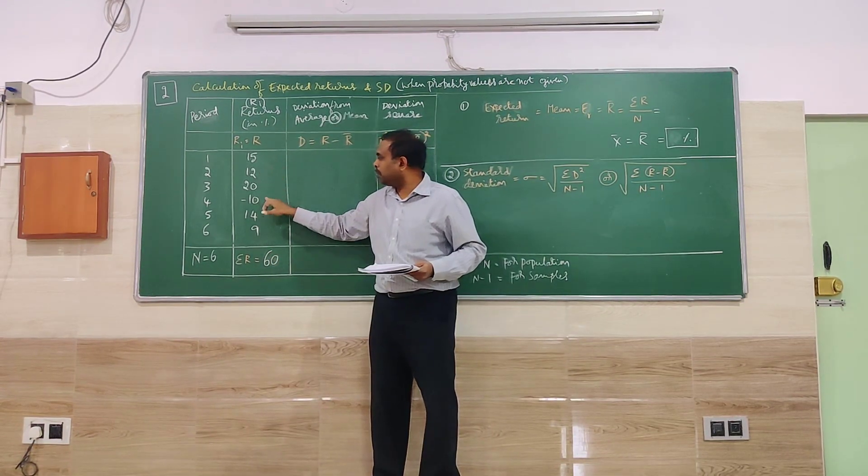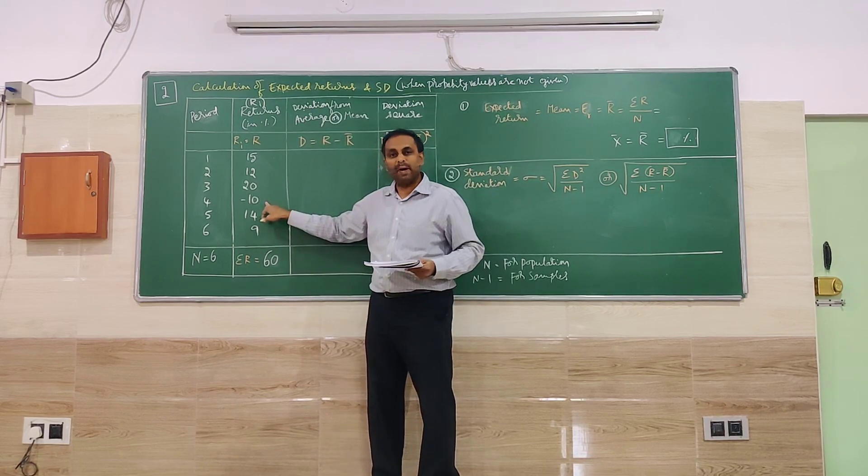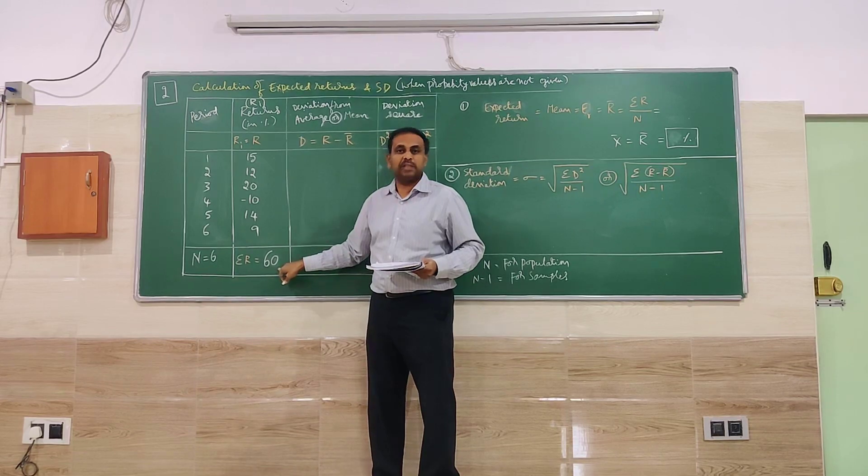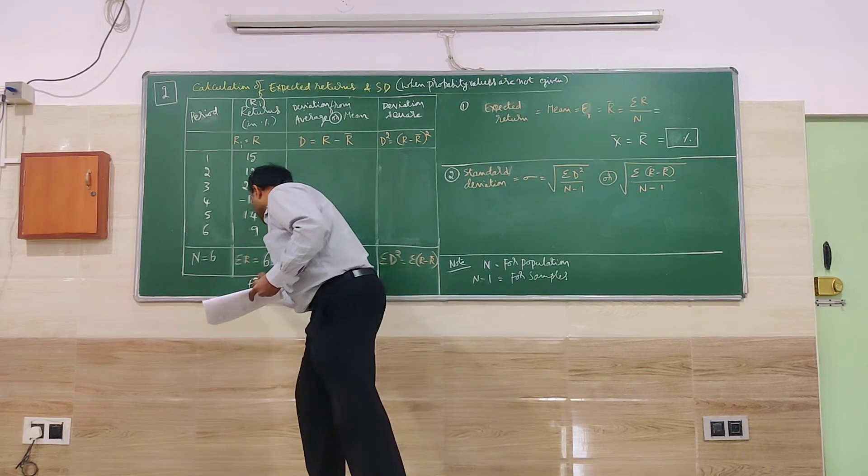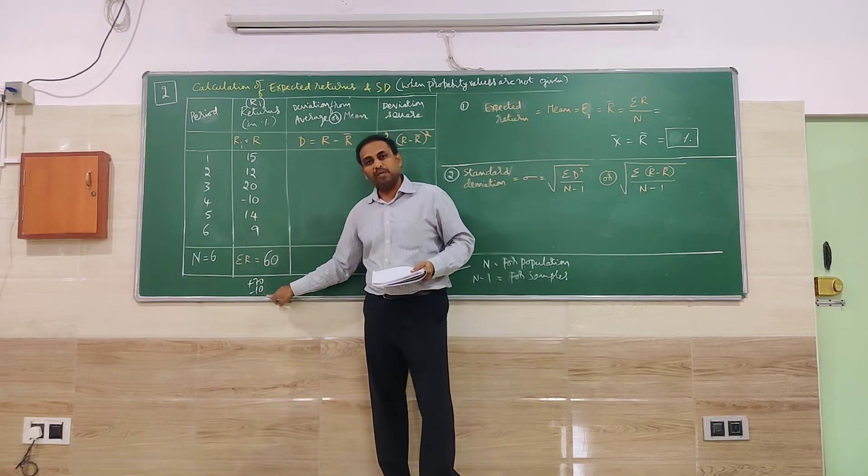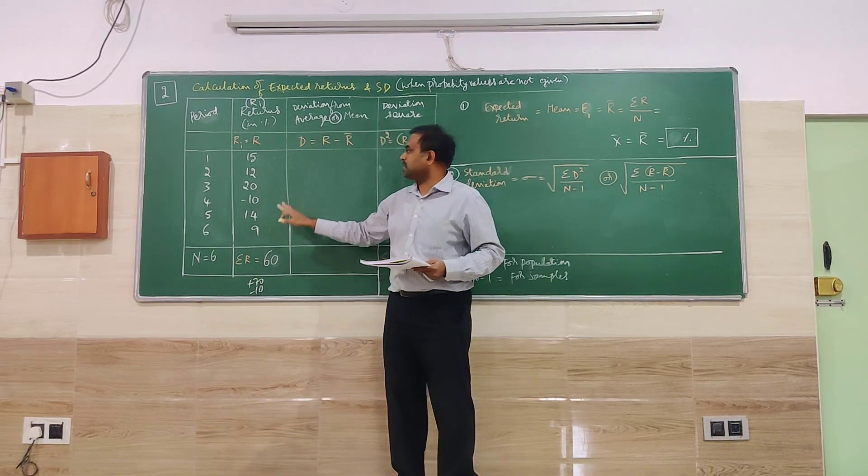So if you add all the plus values, it is 70. And 1 minus value, 10, if you do it, the total will be 60. So in a way, plus 70 minus 10 is there. So plus 70 minus 10 will be equal to 60.